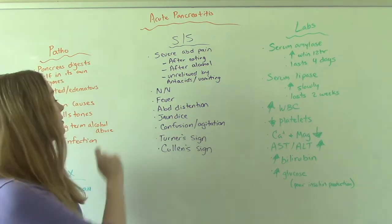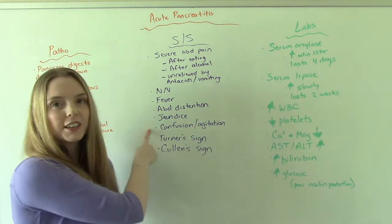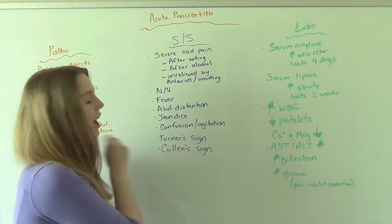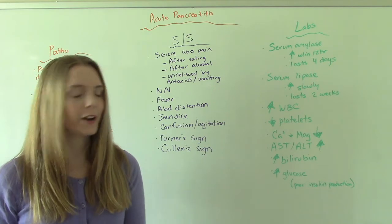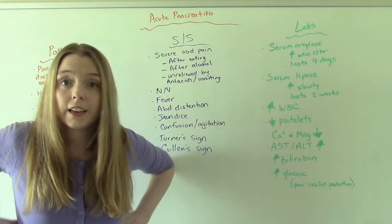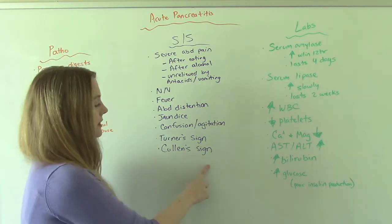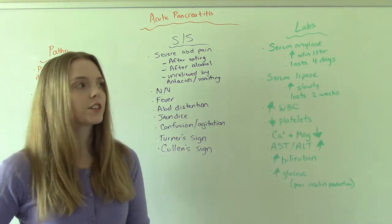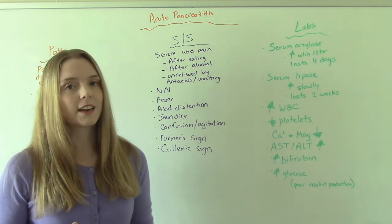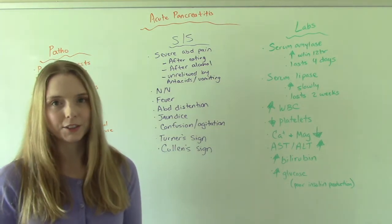Jaundice can appear later on. If we let it get too far, confusion and agitation could occur. And then there's Turner's sign and Cullen's sign — those aren't ones we talk about very often. Turner's sign is ecchymosis, so bruising in the flanks. Cullen's sign is a bluish discoloration of the peri-umbilical area. Those would be very notable findings on our acute pancreatitis patient.